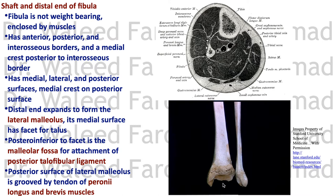Looking at the fibula from the medial direction, you see a facet for articulation with the talus. Posterior and inferior to that facet is the malleolar fossa, which is for the attachment of the posterior talofibular ligament. These are important landmarks for practical exams: the groove on the back of the medial malleolus, back of the lateral malleolus, and the malleolar fossa posterior inferior to the facet for talus articulation.